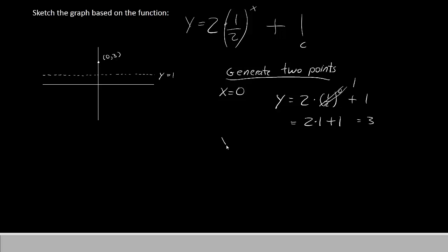The next easiest point to use is probably going to be x equals 1. In general, if you don't know what points to use, 0 and 1 are great places to start. So we'll let y equal 2 times 1 half raised to the first plus 1. Let's do the math. 2 times 1 half is simply 1 plus 1. So 1 plus 1, of course, is 2. So our other point is 1, 2.